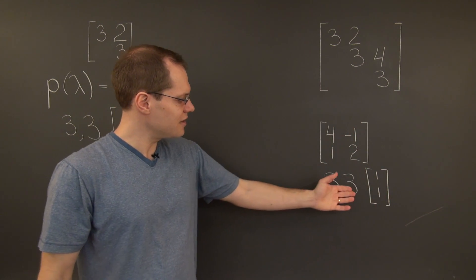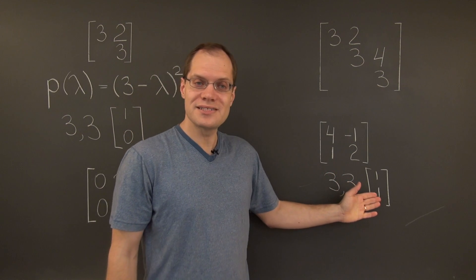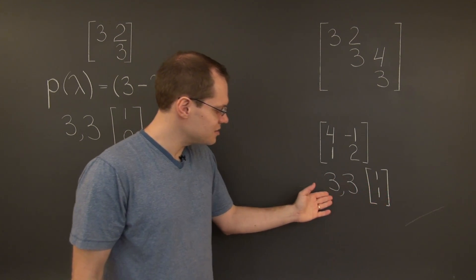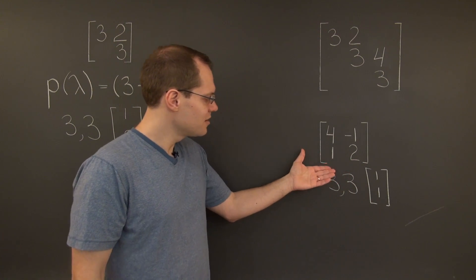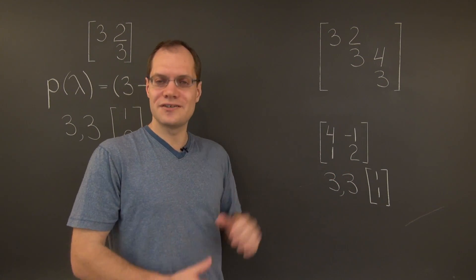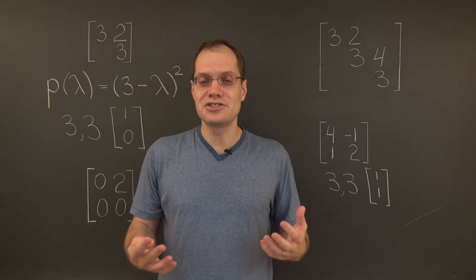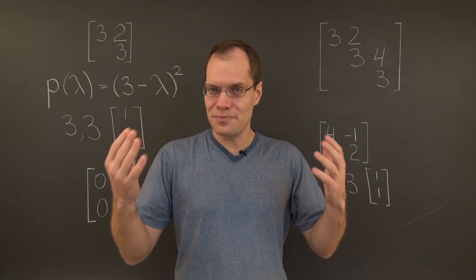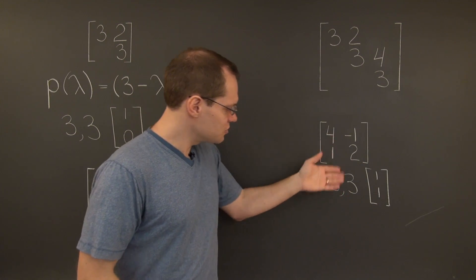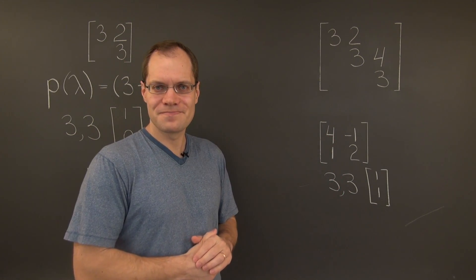But the specific vector is not important. What's important is that the eigenspace corresponding to the eigenvalue 3 is one-dimensional. And, therefore, this matrix is also defective. So, no, a defective matrix does not have to look like this. In fact, a random defective matrix, whatever that means, looks more like a normal matrix.